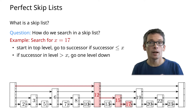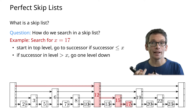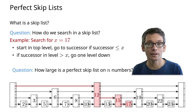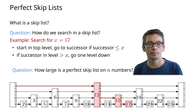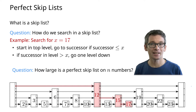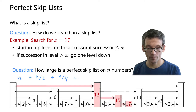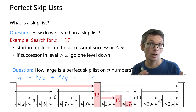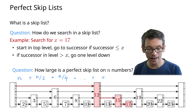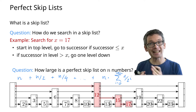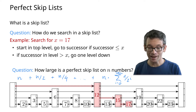Now we want to know how efficient we are — how large the data structure is and how fast these queries are. So how large is a perfect skip list on n numbers? The size of a perfect skip list is linear. On the lowest level we have n elements, then n/2 elements, n/4, and so on, and this adds up to something smaller than 2n. So we have n times the geometric series going up to log n, and even if it went to infinity we would have something smaller than 2n, so the size is indeed linear.